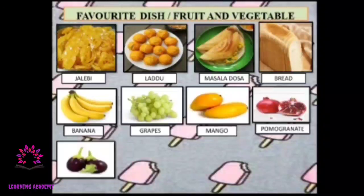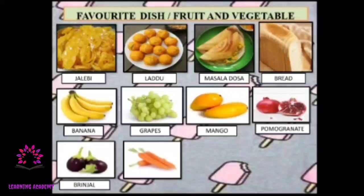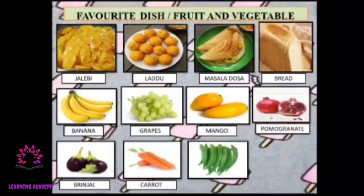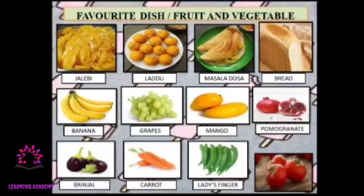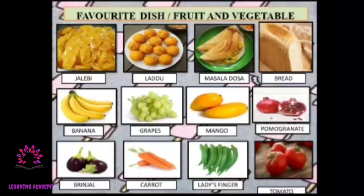Now let's go to vegetables. Some like brinjal, some of you may like carrot, some like ladies finger, and some like tomato. So these are a variety of food items. I hope you understood today's class. Bye!